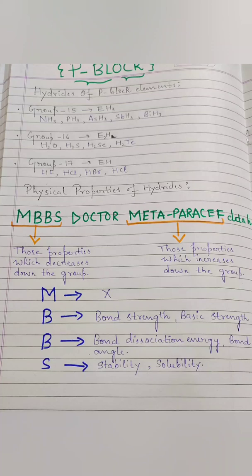Today's topic is: Hydrides of P-block elements. First we will study Group 15 — how Group 15 forms hydrides in the form of EH3. Here E is any Group 15 element, so we have NH3, PH3, AsH3, SbH3, and BiH3.